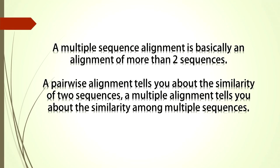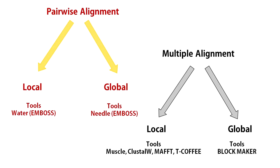Now what is a multiple alignment? A multiple sequence alignment is basically an alignment of more than two sequences. A pairwise alignment tells you about the similarity of two sequences, while a multiple alignment tells you about the similarity of multiple sequences.